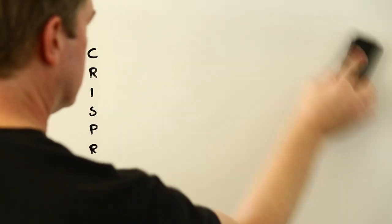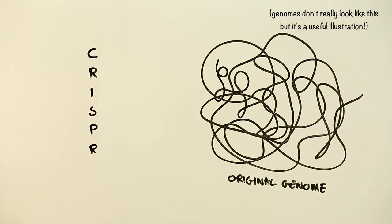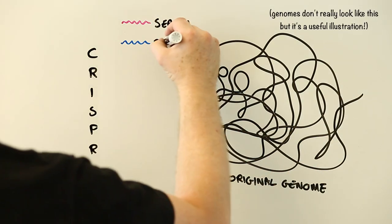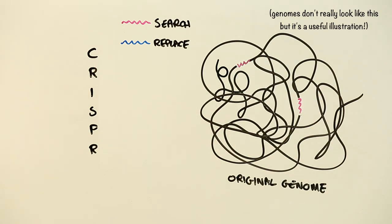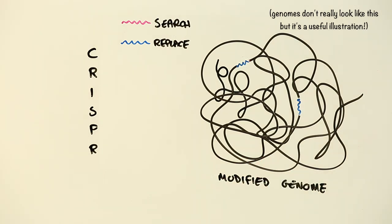It's essentially a sophisticated biological search and replace technology that allows scientists to easily modify the genetic traits of an organism, such as replacing the parts of a mosquito's genome that allows it to host malaria-causing parasites, for instance.